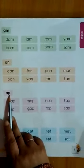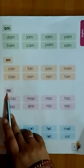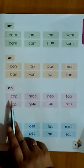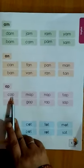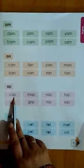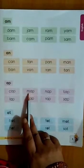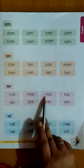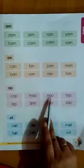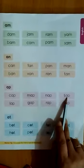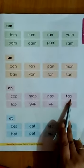A-P cluster words. A-P. C-ap: cap. M-ap: map. N-ap: nap. T-ap: tap.